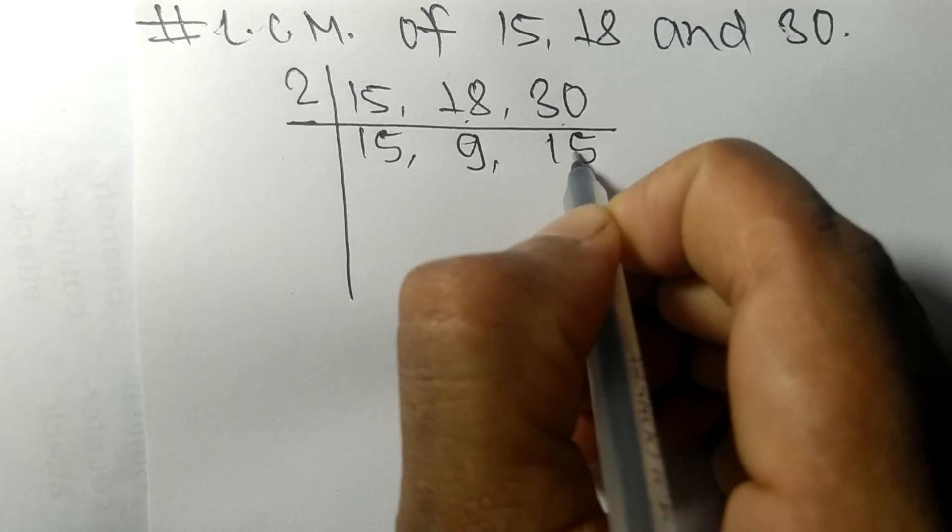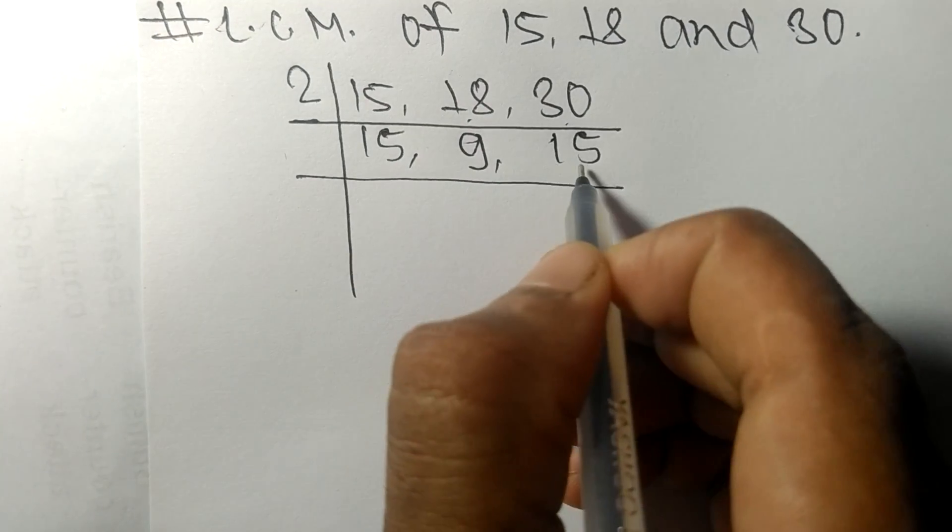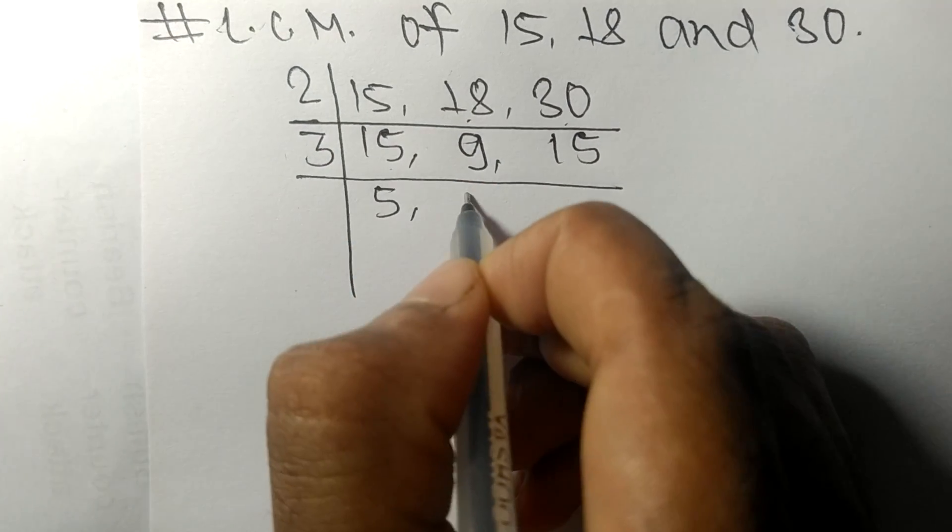Now all these numbers are divisible by 3. 3 times 5 means 15, 3 times 3 means 9, 3 times 5 means 15.